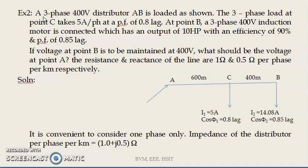In the last video lecture I solved a problem on single phase AC distributor. In this video lecture we shall solve a three phase AC distributor. The problem statement: a three phase 400 volt distributor AB is loaded as shown in the figure. The three phase load at point C takes 5 amps per phase at a power factor of 0.8 lagging.